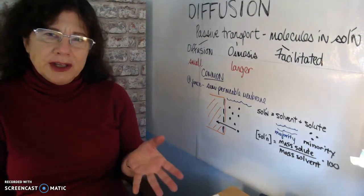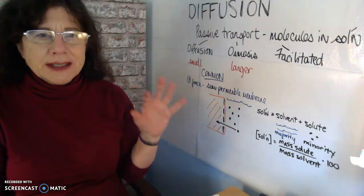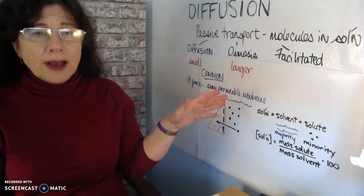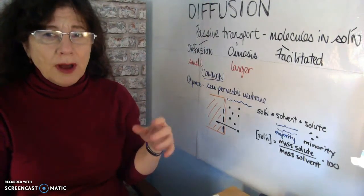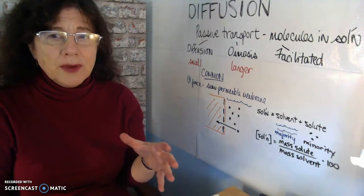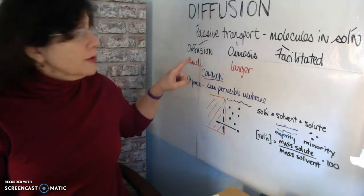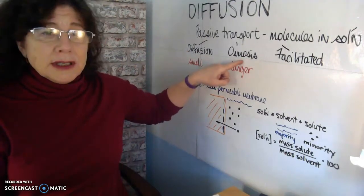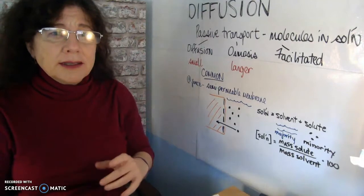Hi everyone. We are on to Activity 2. Just to review a bit: Activity 1 was all about simple diffusion. Diffusion is a blanket term for a set of processes — all of these processes involve passive transport of molecules in solution. The umbrella term of diffusion covers simple diffusion, which you saw in Activity 1, osmosis, which we're going to do in Activity 2, and facilitated transport, which we are not going to discuss in this lab.